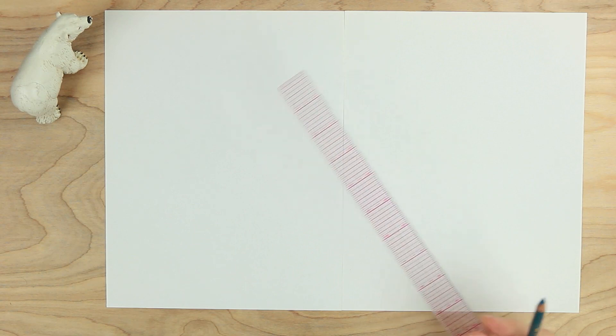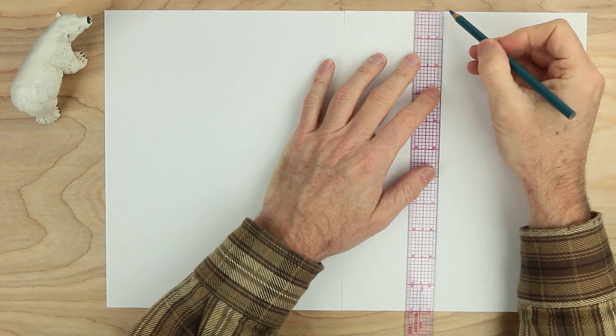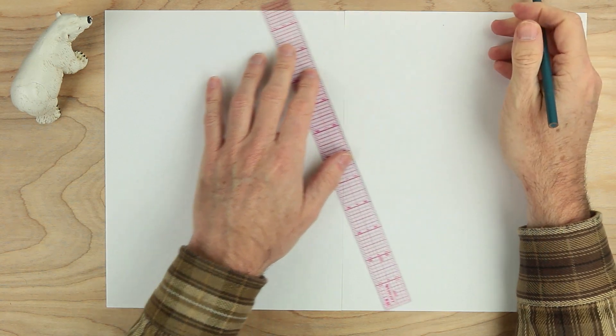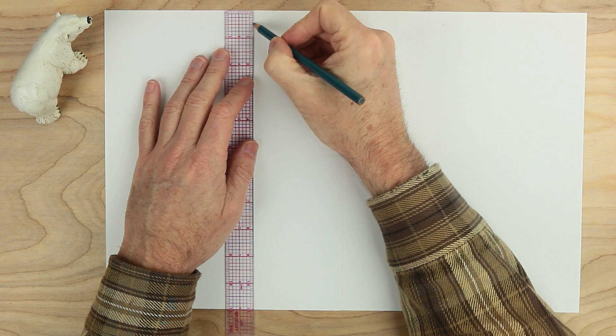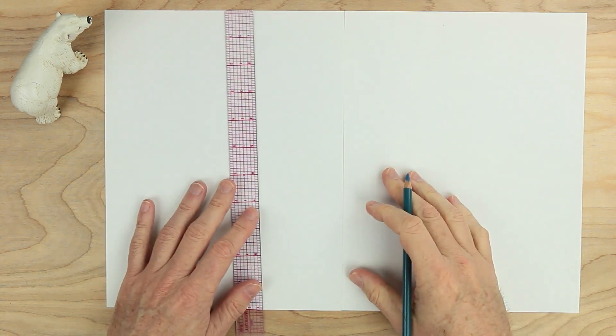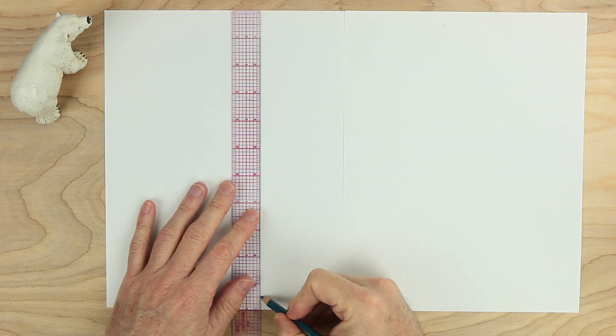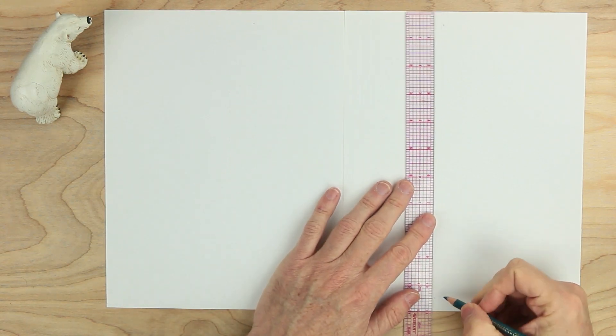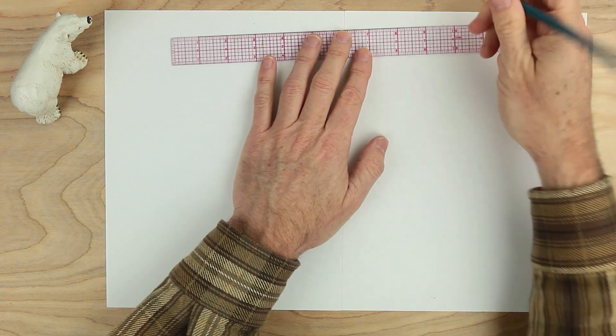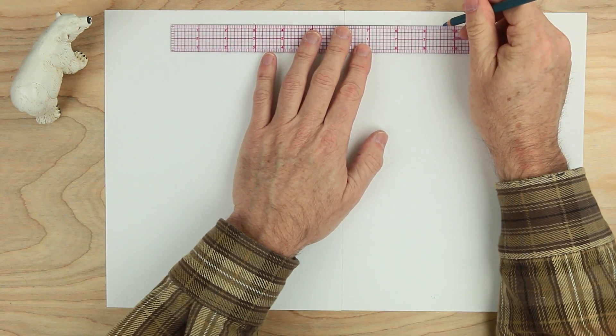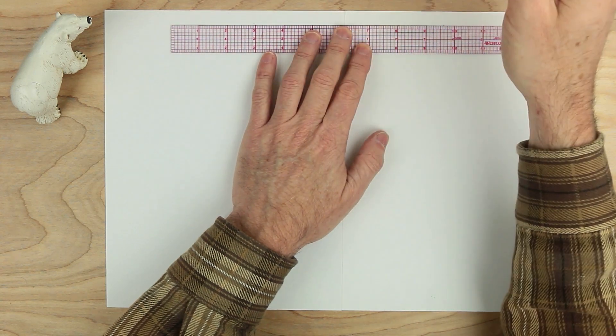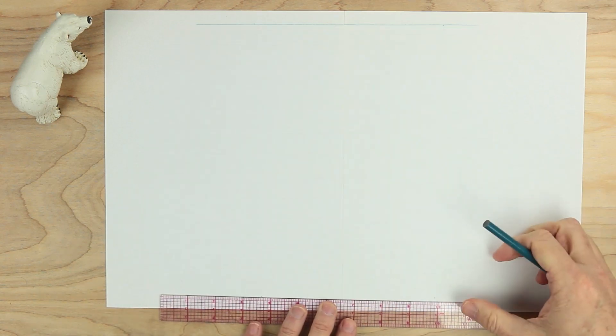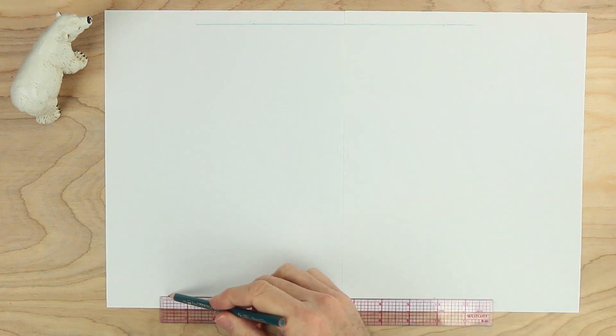So I'm going to need my ruler for this part. What I want to do is on the top here, measure down about half an inch, maybe a centimeter or so if you're using another kind of measure. Half an inch at the bottom as well. Measure about half an inch up on both sides. And go ahead and draw a line with your pencil all the way across. Bottom as well. All the way across.